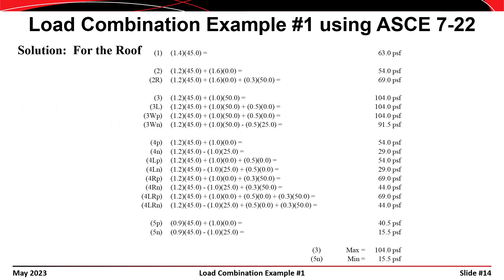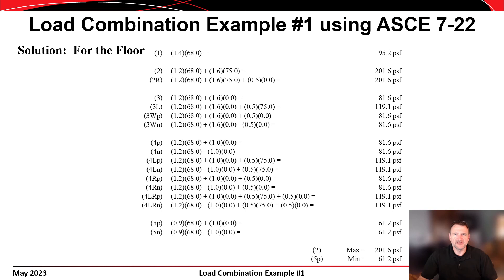It isn't always readily apparent which load combinations will govern, so you always have the option of working out all the different permutations. I've used a spreadsheet in Microsoft Excel to evaluate all the different permutations numerically. As you can see, we end up with the same maximum roof load of 104 pounds per square foot from load combination number three and a minimum loading of 15.5 pounds per square foot from combination number five. The same spreadsheet confirms a maximum floor load of 202 pounds per square foot from load combination number two.